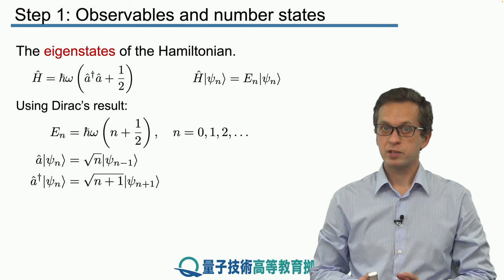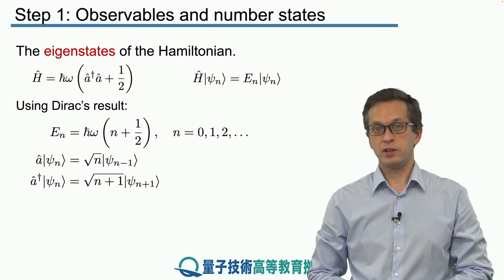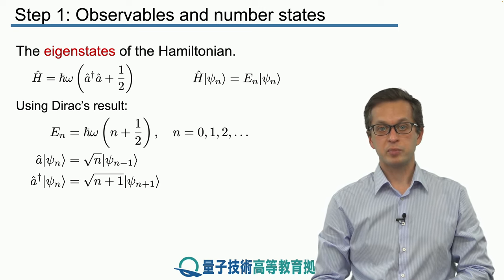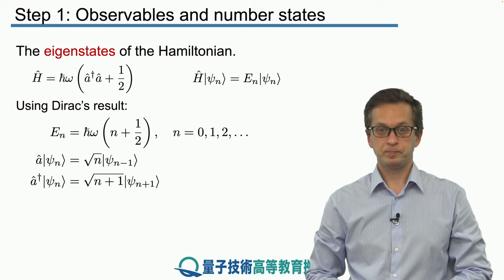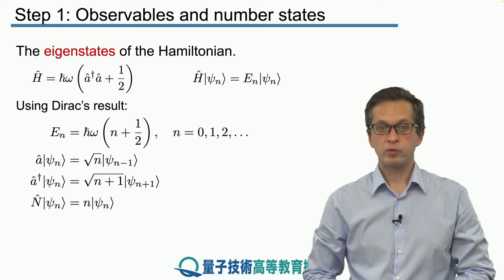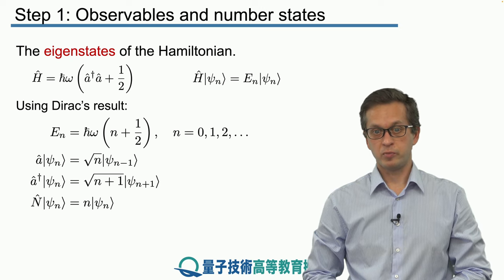On the other hand, A† does the opposite: it creates one quantum of energy in the field and takes us from |ψₙ⟩ to |ψₙ₊₁⟩. We have the corresponding relationship for the number operator.